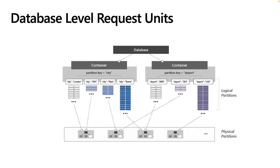When you provision throughput at the database level, the throughput is shared across all the containers in the database. At the time of this recording, the number of containers that may participate in database-level shared throughput is limited to 25. However, you may provision additional containers using dedicated throughput even though some containers are using shared throughput. Because the provisioned resources are shared across all containers, Cosmos DB does not guarantee predictable performance for an individual container. The portion of throughput a specific container can receive depends on the number of containers, the partition key choice, and the distribution of workload across the logical partitions.